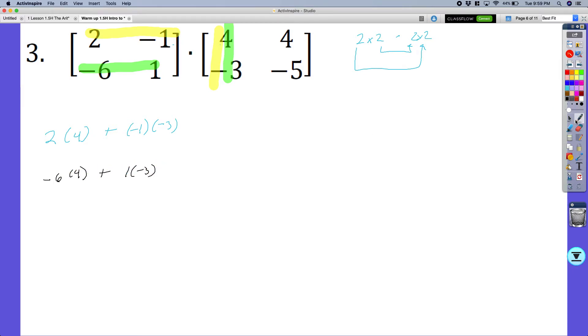And we're going to go ahead and move on to their next one. First row, second column. So that would look something like 2 times 4 plus negative 1 times negative 5. And then our final one, last row, second row, second column. So what that would look like then is negative 6 times 4 plus 1 times negative 5.